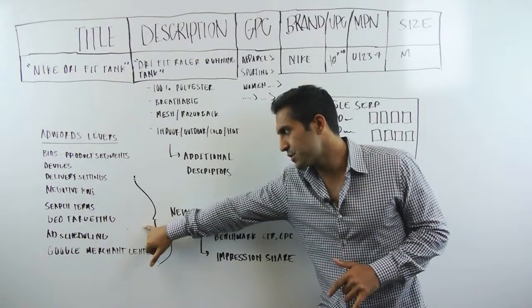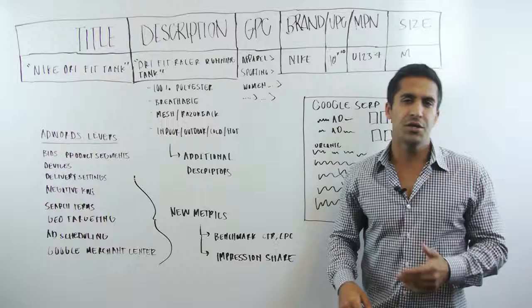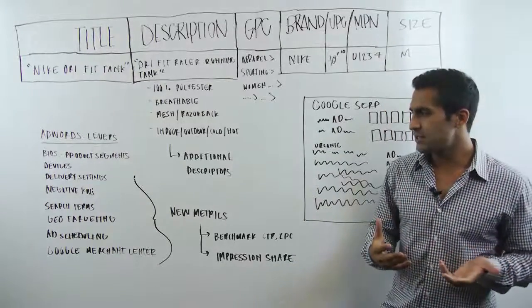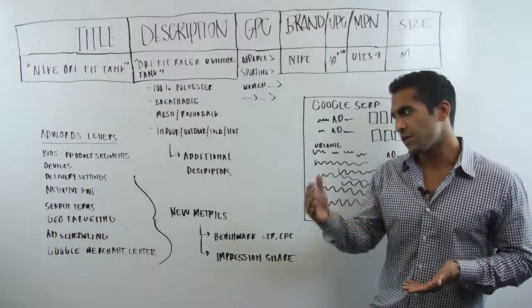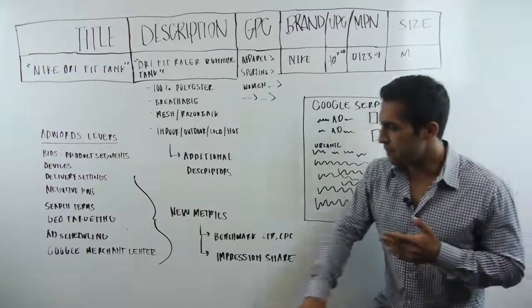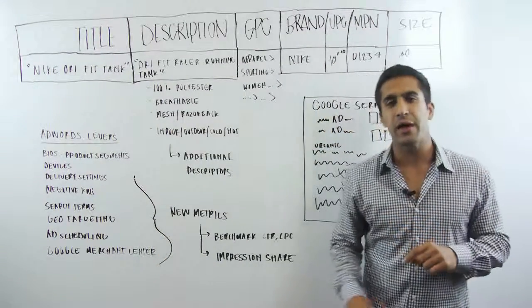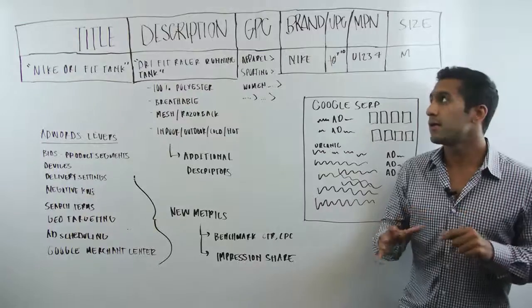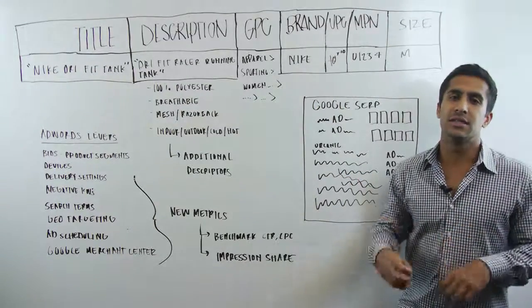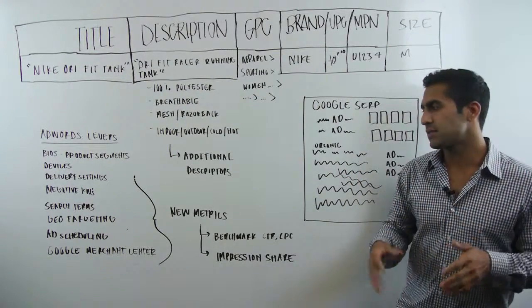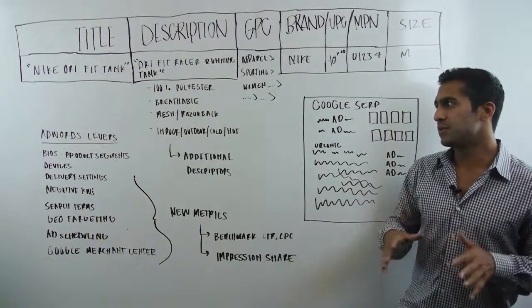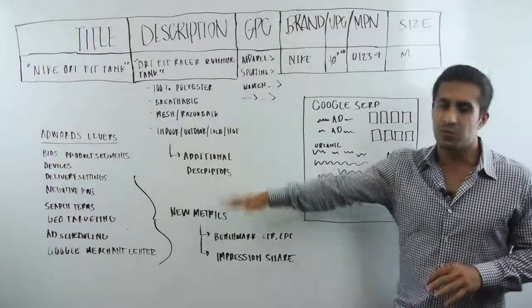Geo-targeting and ad scheduling, those are pretty standard. Geo-targeting lets you target based on certain states. Ad scheduling lets you decide when the actual ads are served. And then finally, we've got the Google Merchant Center. That's where your actual data feed full of all your products is housed. That's where Google processes all that information.